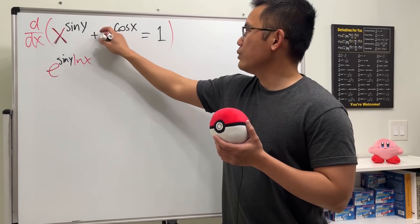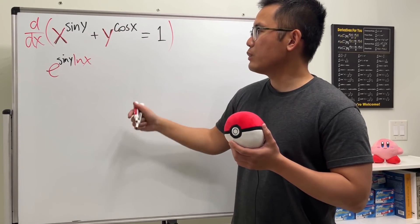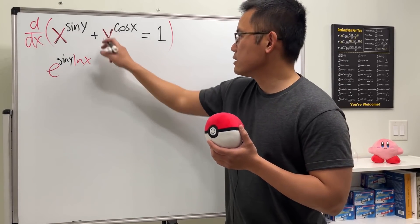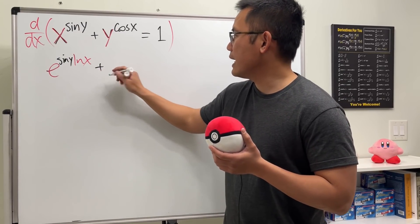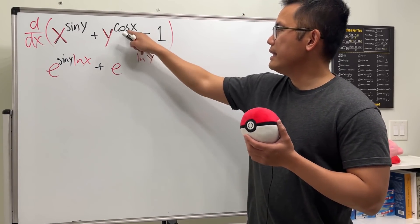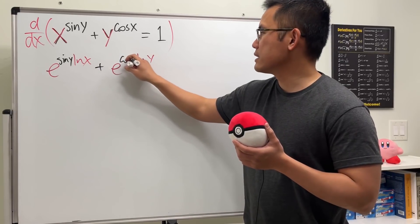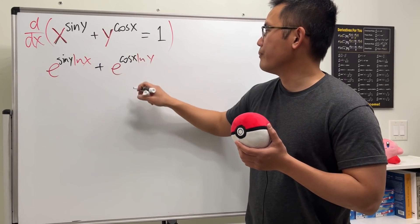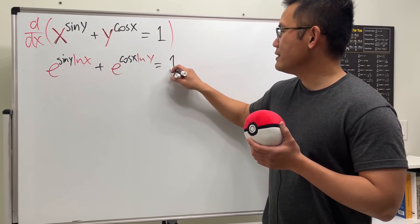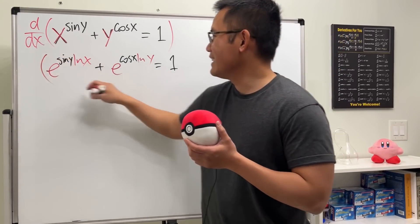Similarly, we rewrite y as e to the ln y power. So the second term becomes e^(ln y) raised to the cosine x power, which equals e^(cos x · ln y). Now we have both terms rewritten and we're ready to differentiate.